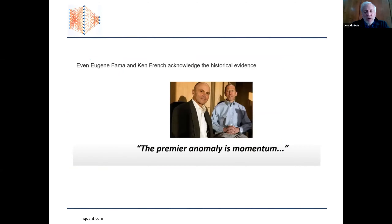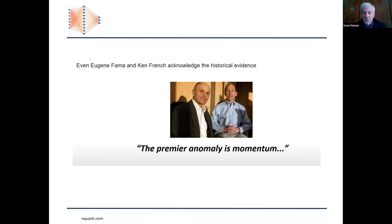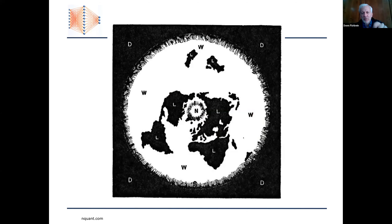Fama and French from the University of Chicago School of Economics are major proponents of the so-called efficient market hypothesis. This hypothesis says that everything known is already incorporated into the market and that the next move the market makes is completely random. They made an interesting comment: the premier anomaly is momentum, because stocks that are doing well tend to keep doing well and stocks that are not doing well tend to continue to decline. In science, anomalies are sometimes indications that your theory is just flat wrong.